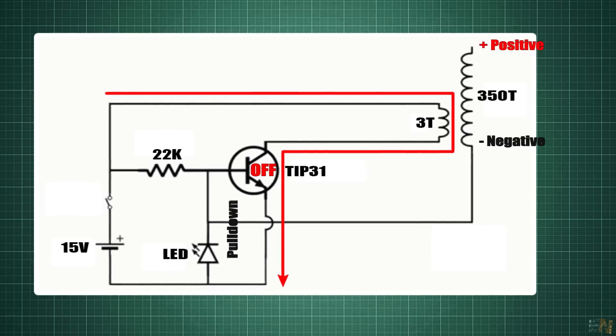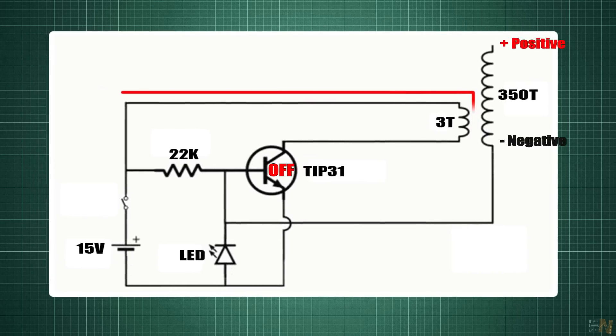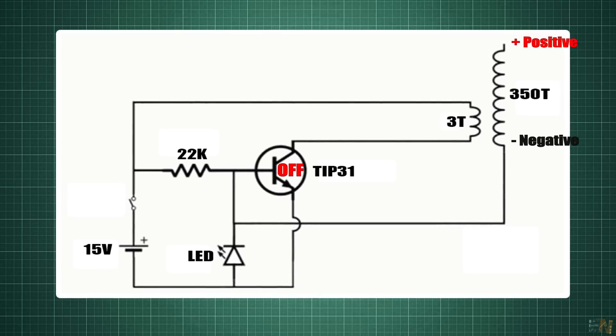But this is just for a brief moment, because now the magnetic field in the primary will collapse and invert the polarity in the secondary. So now once again the transistor will be switched on and the entire process will repeat on and on, creating the resonance frequency given by the entire circuit values.